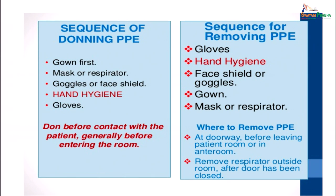There is a specific sequence for wearing PPE: first wear the gown, then mask or respirator, then goggles or face shield. Finally, do hand hygiene and only then wear gloves. For removal, first remove the gloves, do hand hygiene, then remove the face shield or goggles, then the gown, and finally the mask or respirator.